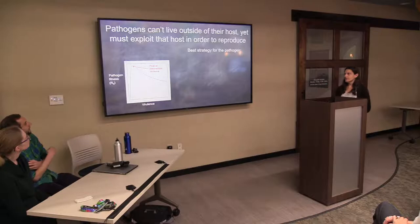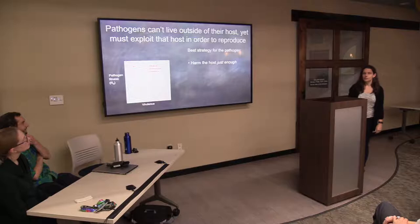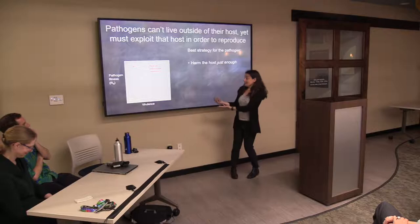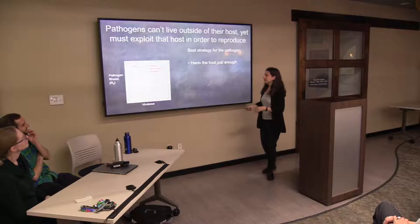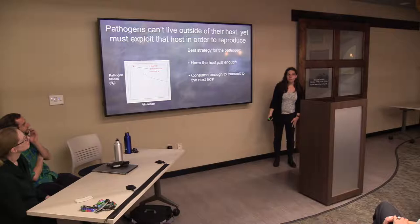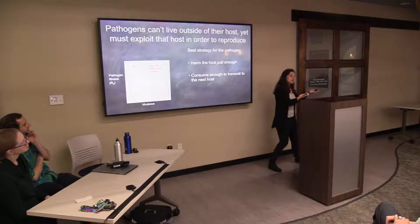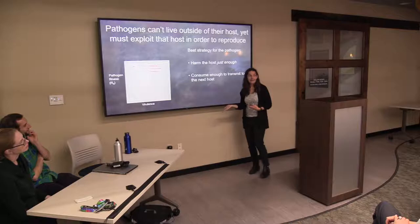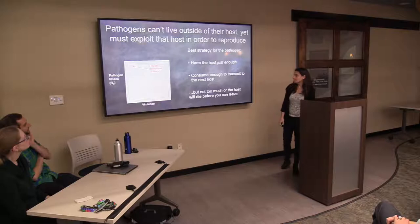A lot of original theory predicts the best strategy for the pathogen is somewhere in the middle: harm the host just enough. In your gingerbread house, eat the less essential bits but leave the roof. You also need to make sure your population grows enough to get to the next host. Alternatively, if you have another gingerbread house lined up down the street, you could eat your current house quickly and move on to the next one — same with pathogens.